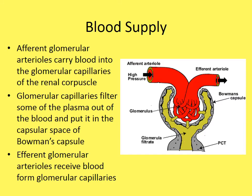Afferent glomerular arterioles carry blood into the glomerular capillaries of the renal corpuscle. These capillaries filter some plasma out of the blood and deposit it into the Bowman's capsule — that is the filtration step — turning it into glomerular filtrate.